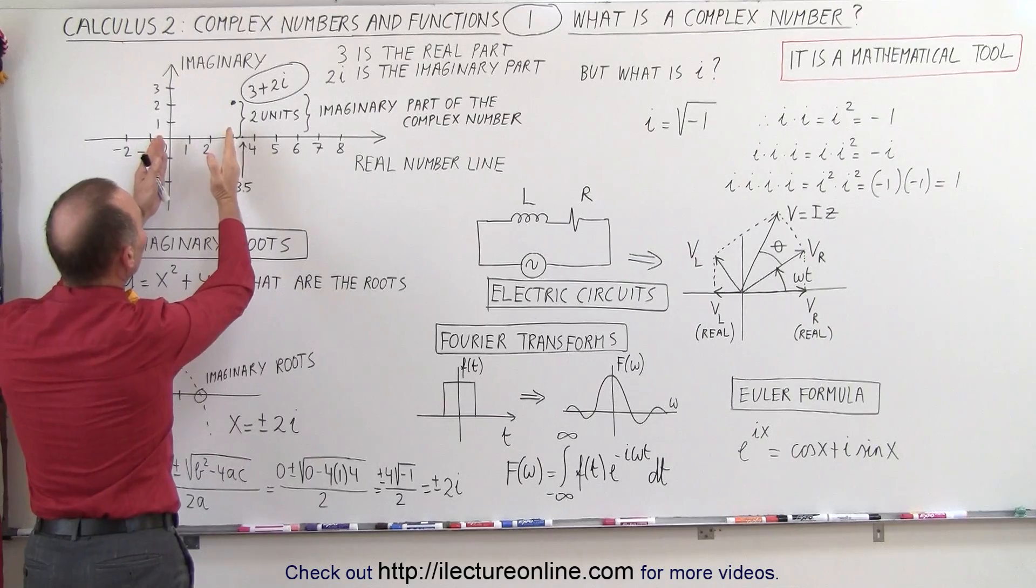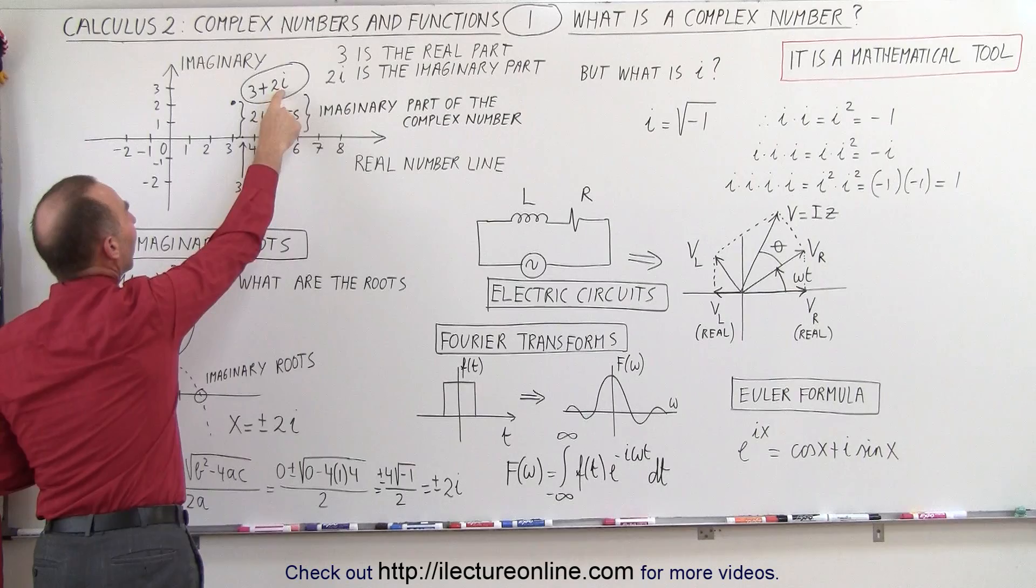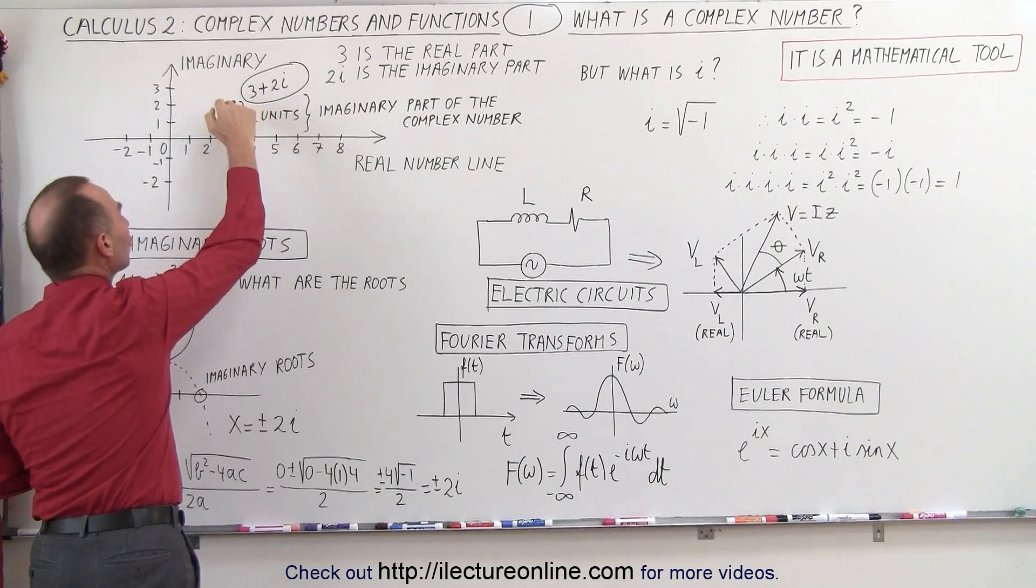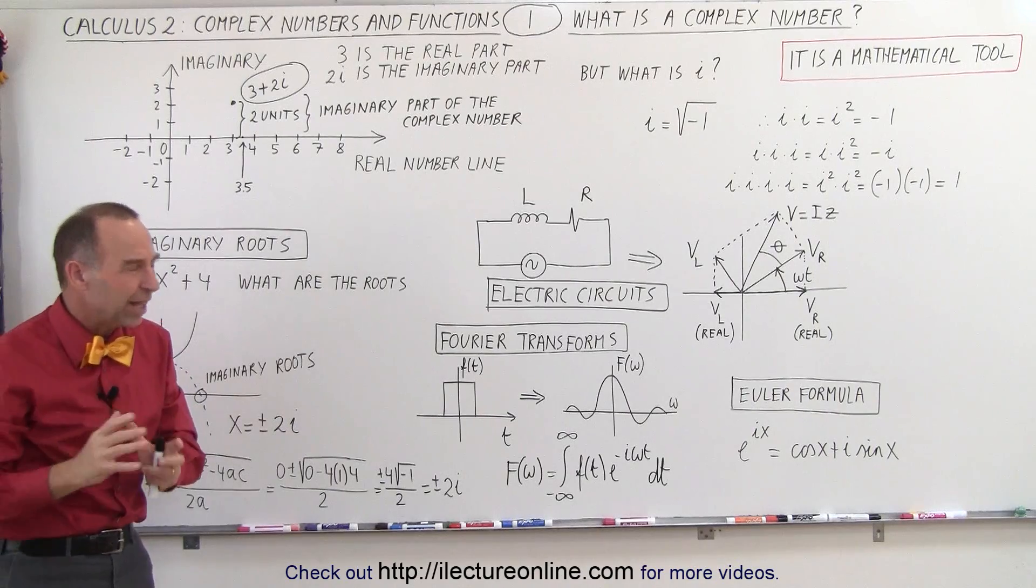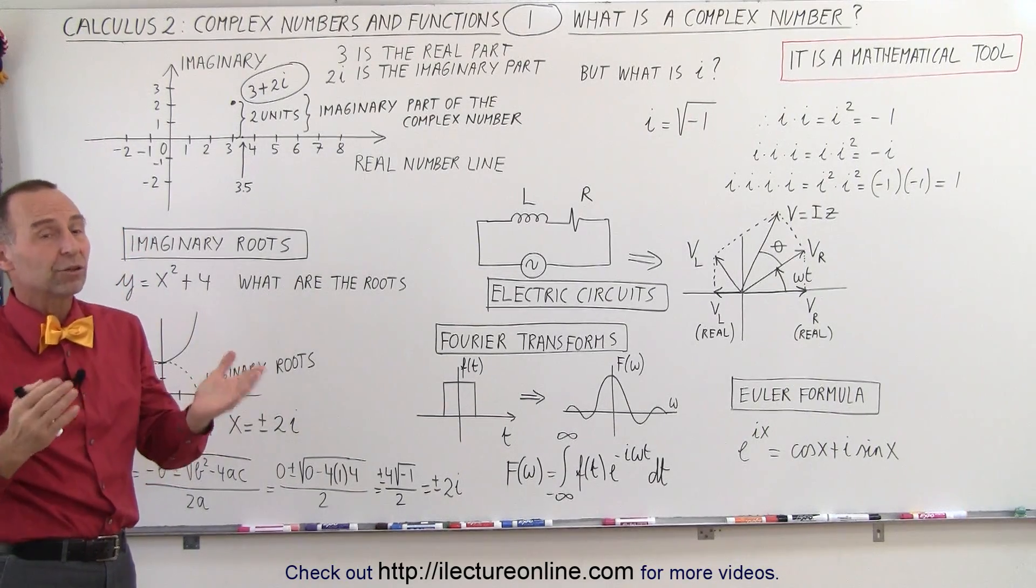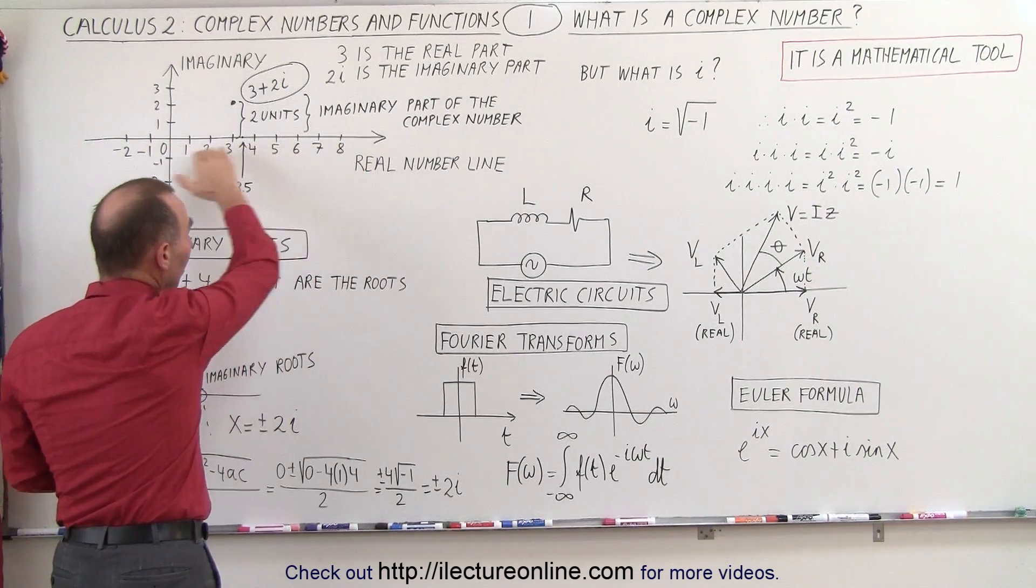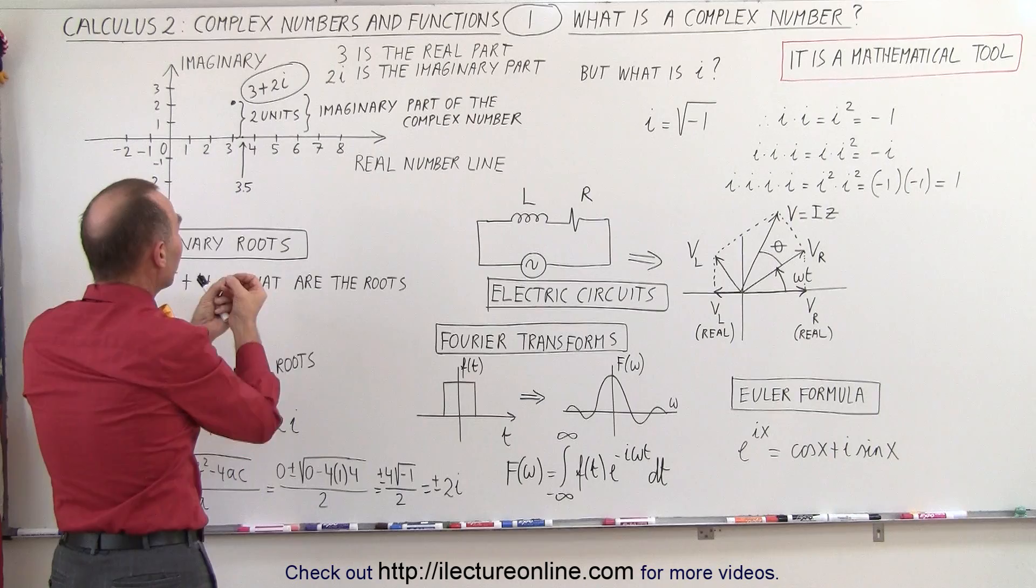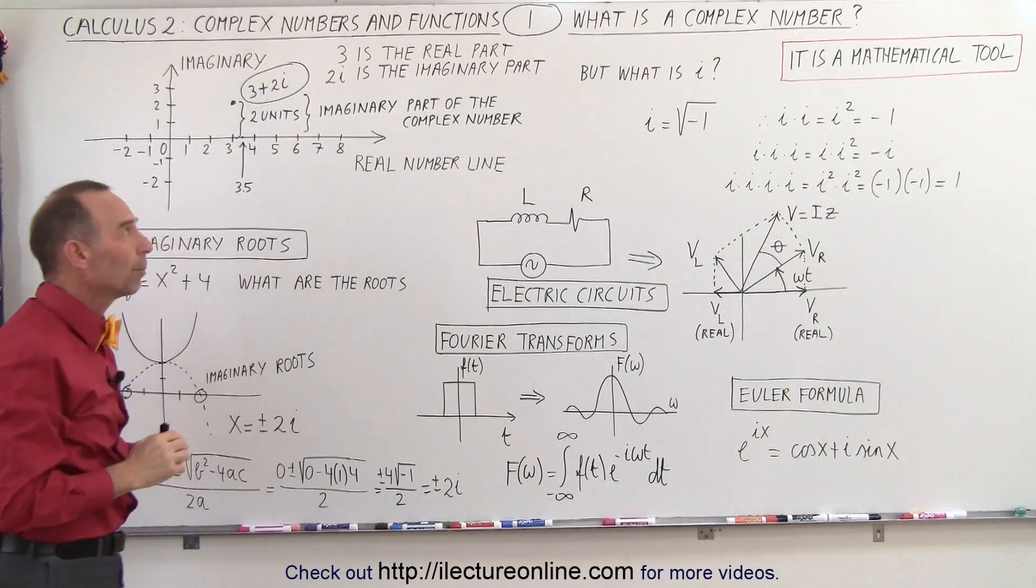that point represents an imaginary number. It has a real part, the number 3, but it has an imaginary part, the number 2i, because it's two units away from the real axis. That still doesn't tell us what it really is. But what we understand now is that an imaginary number has a real part belonging to the real number line, and it has an imaginary part belonging to the imaginary plane away from the real number line.